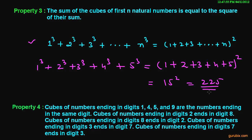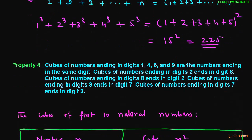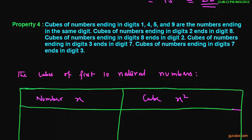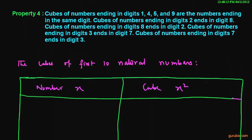We calculate the square of 15, which will be 225. So 225 is the sum of cubes of first 5 natural numbers. We can find the sum of cubes of n natural numbers using this formula. So this is the third property.